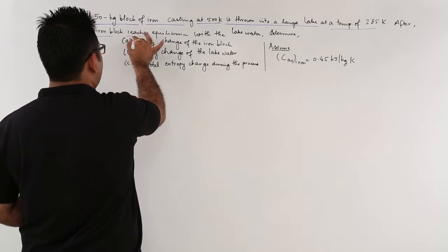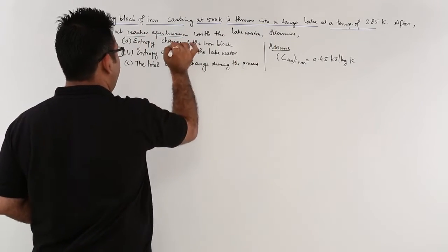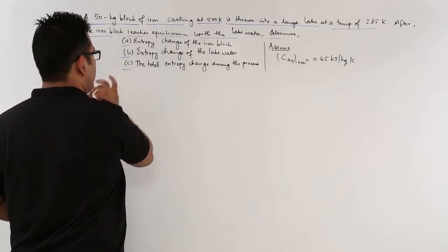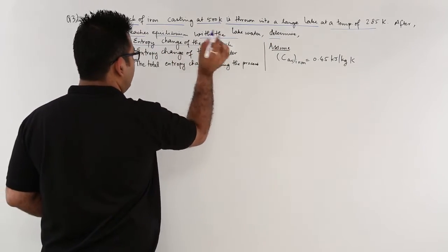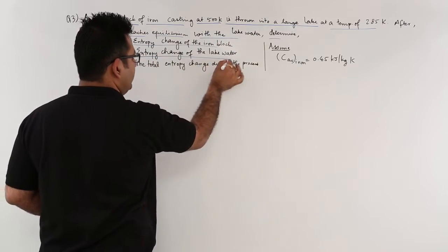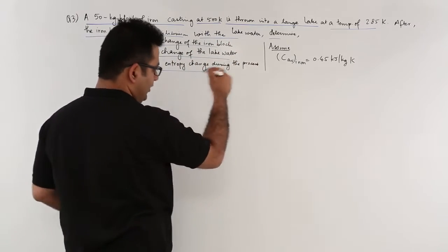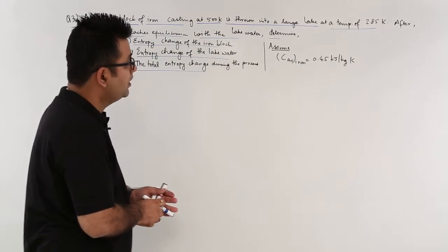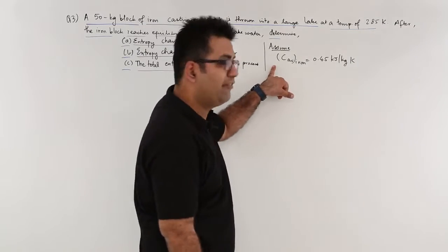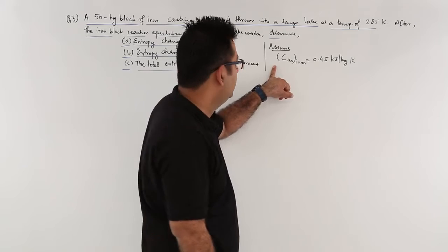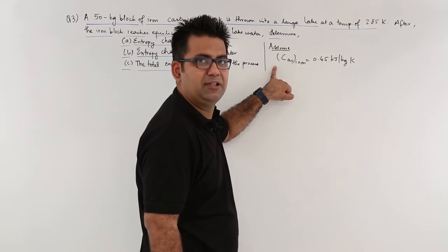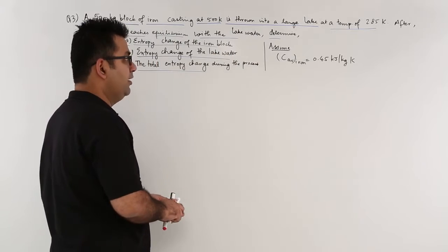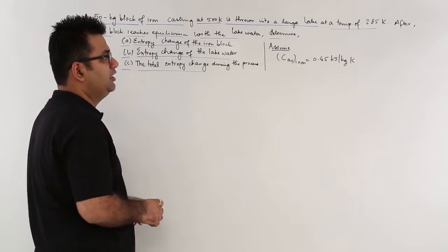After the iron block reaches equilibrium with the lake water, determine three things: first, the entropy change of the iron block; second, the entropy change of the lake water; and third, the total entropy change of the process. We assume the average specific heat capacity of iron as 0.45 kJ per kg Kelvin.